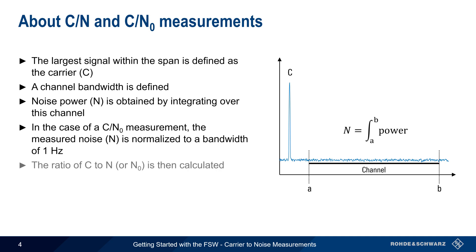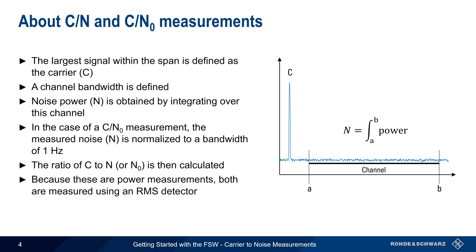The values of Carrier Power and Noise, or Noise Density, are then used to calculate the ratio of Carrier-to-Noise. Note that because these are power measurements, both the carrier and the noise are measured using an RMS detector.